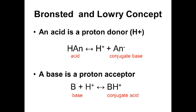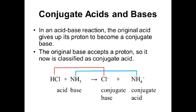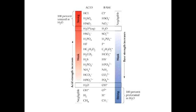Acids form the conjugated bases after dissociation, and bases accepting hydrogen ions form conjugated acids. In reactions where acids react with a base, conjugated bases and conjugated acids are formed. The stronger the acid, the weaker its conjugated base, and vice versa — the stronger the base, the weaker its conjugated acid.